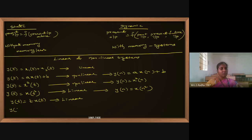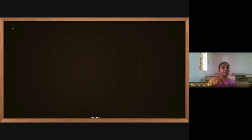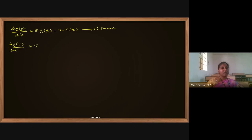t·x(t) is linear. y(t) = x(t)·cos(ωct) is also a linear system following the full procedure. The differential equation dy(t)/dt + 5·y(t) = 2·x(t) is a linear system. However, dy(t)/dt + 5·y(t) + constant = x(t) — the constant makes it nonlinear.